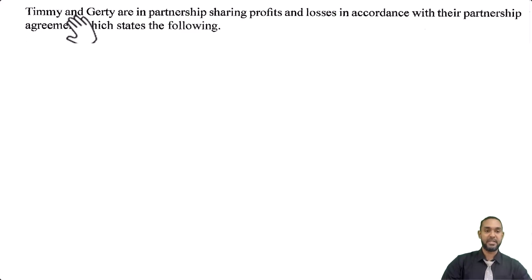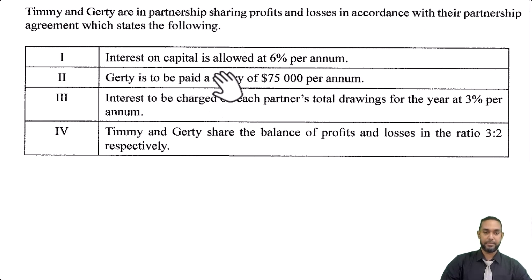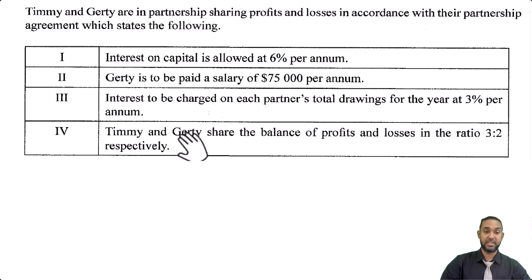So it reads: Timmy and Goethe are in partnership sharing profits and losses in accordance with their partnership agreement, which states the following. 1. Interest on capital is allowed at 6% per annum. 2. Goethe is to be paid a salary of $75,000 per annum. 3. Interest is to be charged on each partner's total drawings for the year at 3% per annum. 4. Timmy and Goethe share the balance of profits and losses in a ratio of 3 to 2 respectively.